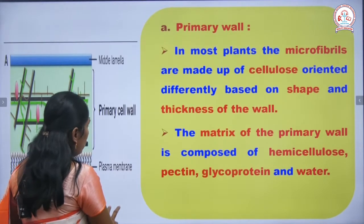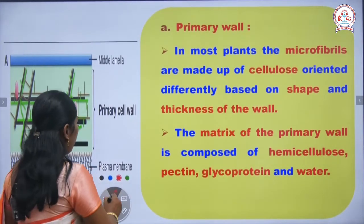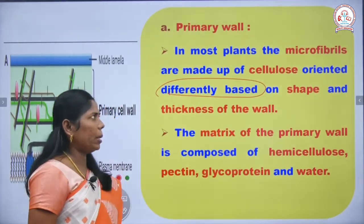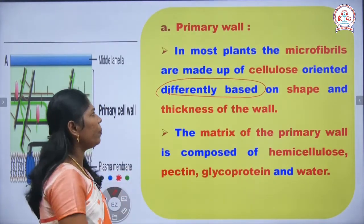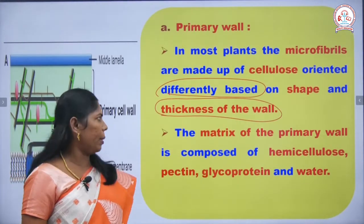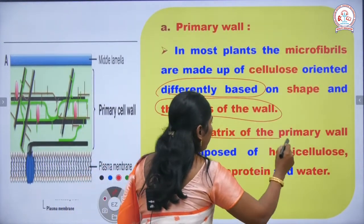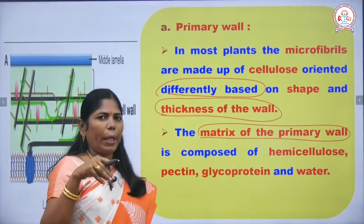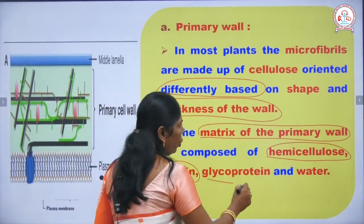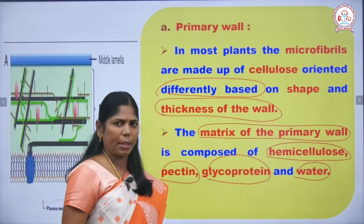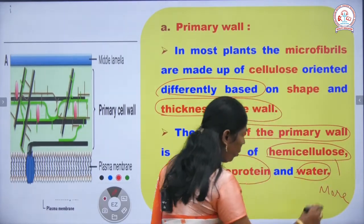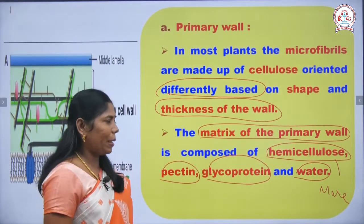The microfibrils are made up of cellulose oriented differently based on the shape of the cell. The matrix of the primary wall contains hemicellulose, pectin, glycoprotein, and water. The primary wall has more hemicellulose but less cellulose compared to the secondary wall, which has more cellulose and less hemicellulose.